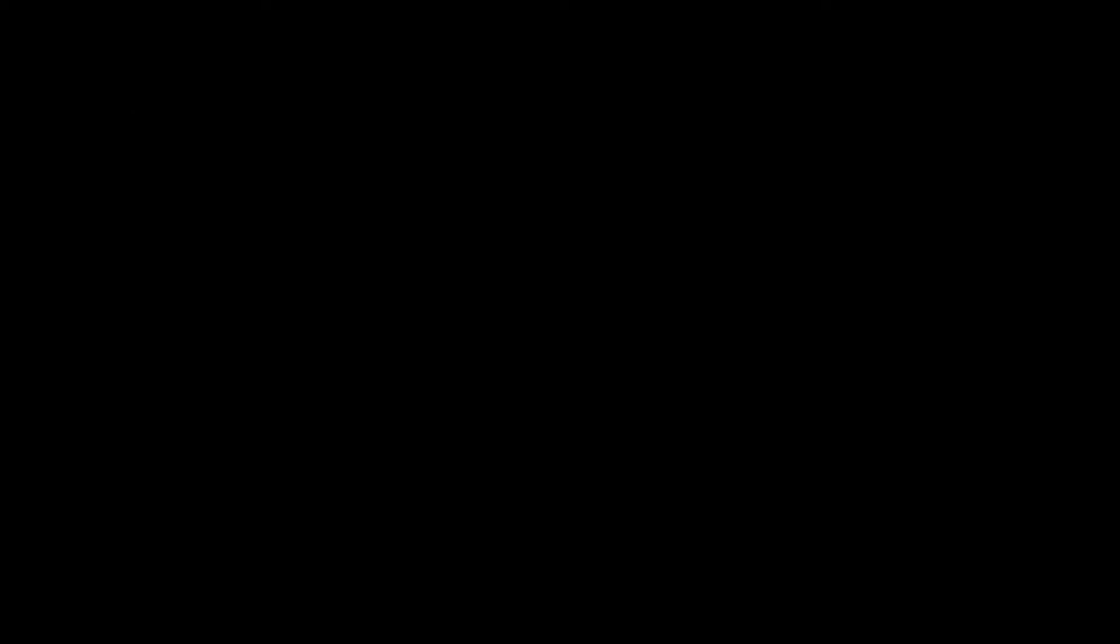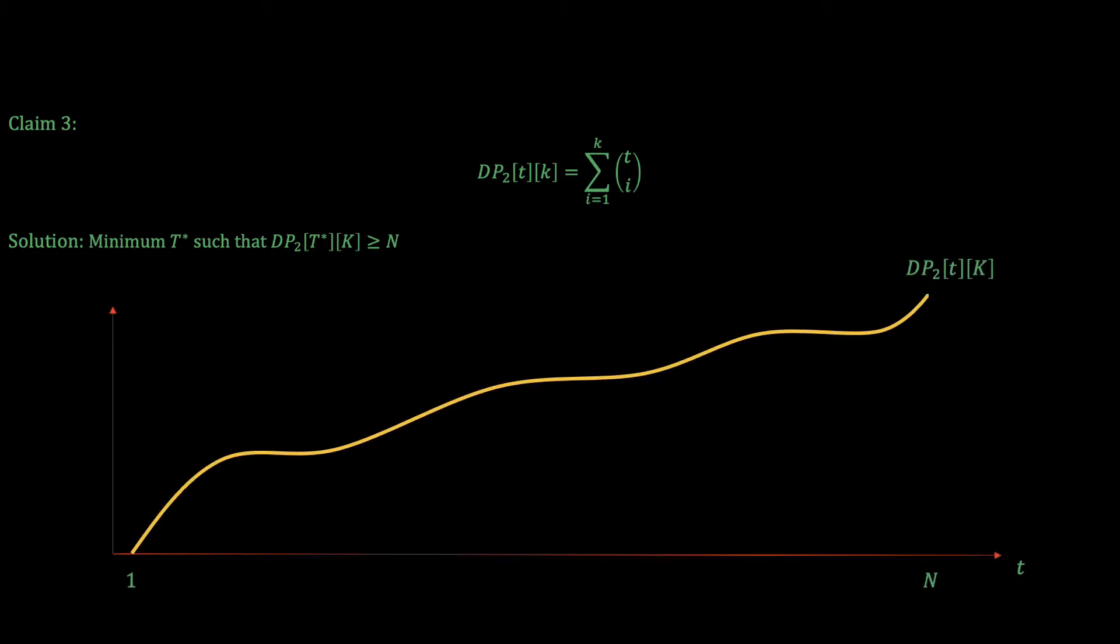Great! With claim 3 proven we're finally ready to present the new solution. Remember that we're interested in the minimum number of turns T* where DP2[T*][K] is at least N. Or the minimum number of turns to search at least N floors with K eggs. Notice that DP2[T][K] is increasing or monotonic with respect to T. This is because as we have more and more turns we can search a larger number of buildings with the same number of eggs. And so we can plot it like this. If we look at capital N then we're interested in finding T* as shown in the figure. The key idea is again to use binary search. For any fixed T we can in O(K) time calculate the value DP2[T][K] using claim 3. So we can binary search on where T* is at.